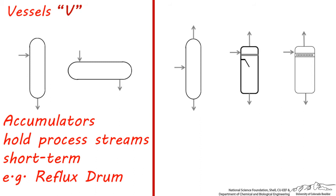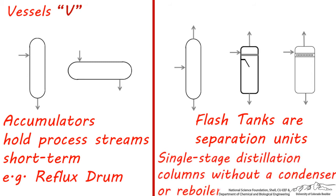Flash tanks, on the other hand, are a separation process unit, and they physically separate a homogeneous stream into vapor and liquid portions, which have different compositions. Flash tanks are not splitters. They're actually single-stage distillation columns without a reboiler or condenser, and they separate components based on boiling point.